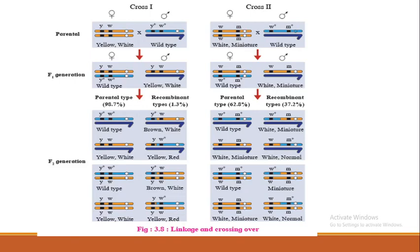In cross two, the two genes are farther apart, so the chance of crossing over is much higher. The recombinant percentage is 37.2% and parental type is 62.8%. Because recombination is higher in cross two, we can see the ideal 9:3:3:1 ratio in that dihybrid cross, but not in cross one. The phenomenon responsible for the deviation from the expected inheritance ratio is nothing but linkage.